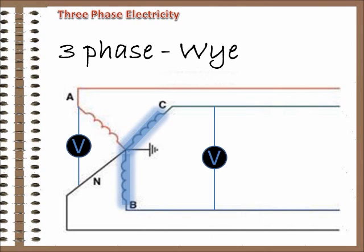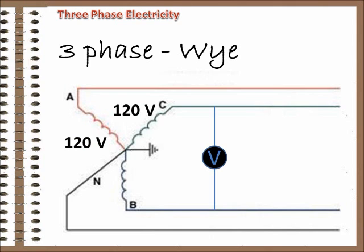Unfortunately, it's not as easy as multiplying by two because the phases are separated by 120 degrees, remember? For example, if the rotating magnetic field is creating 120 volts of potential in each phase, the combination of two phases results in 208 volts.